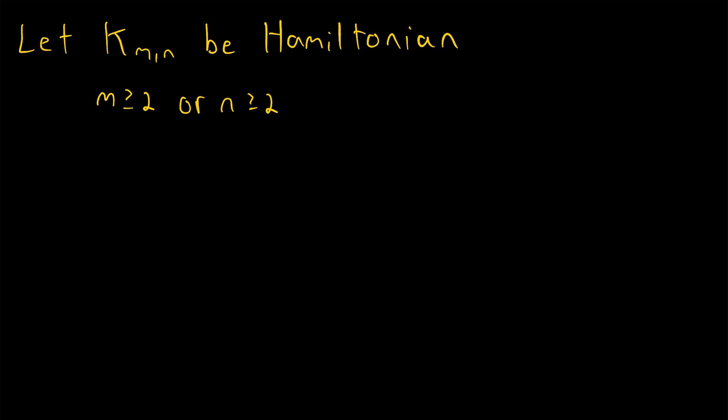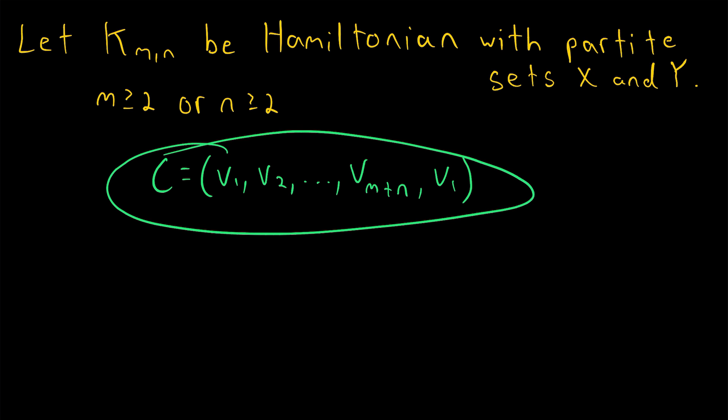Let's begin by naming our partite sets. Since we know this is a complete bipartite graph, let's call its partite sets X and Y. Now the only other thing we know about the graph is that it's Hamiltonian, so we might as well write out a Hamiltonian cycle of the graph. Let's call the Hamiltonian cycle C, and it starts at some vertex v_1, then goes to some vertex v_2, and so on, all the way up to—how many vertices are there in the graph? Well, there are m plus n vertices in the graph, so the last distinct vertex of the cycle is v_{m+n}, and then it needs to return to v_1 to complete the cycle. This is a Hamiltonian cycle in our graph.